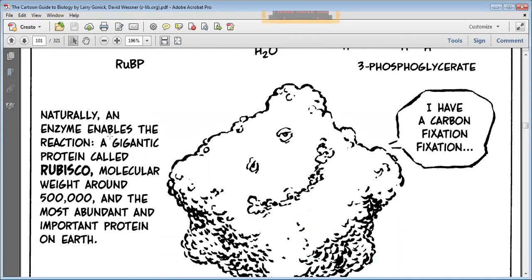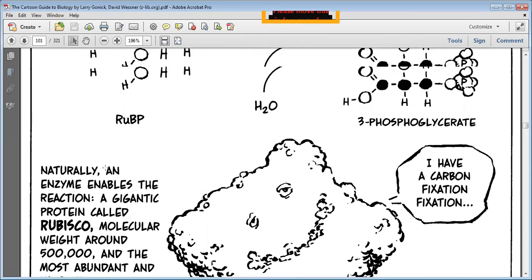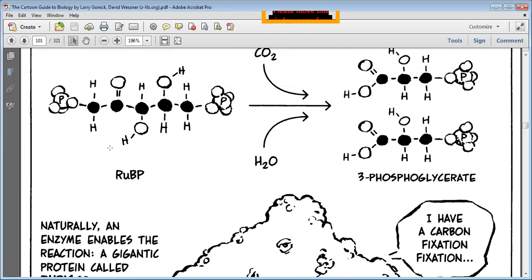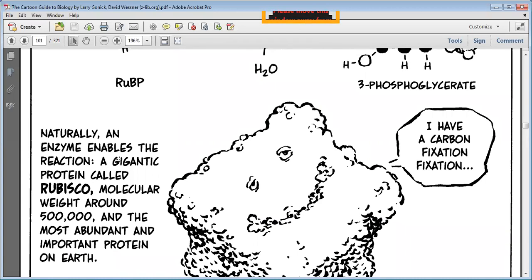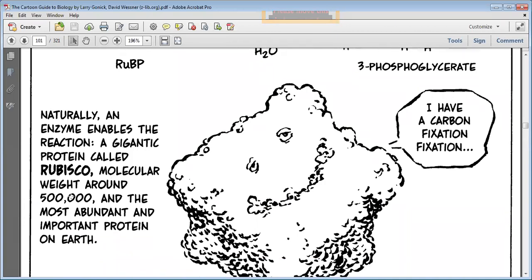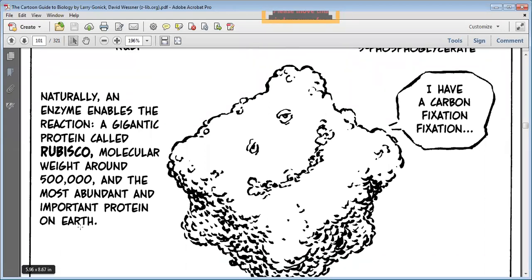Naturally, an enzyme enables the reaction, a gigantic protein called rubisco. I have a carbon fixation. The molecular weight is around 5 lakh, and the most abundant and important protein on earth.